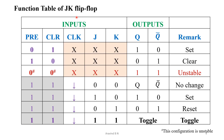Before getting into the design of the counter, let us look at the functional table of the JK flip-flop. Within this functional table, we are going to use one specific condition to design the counter — that is the toggle condition. For the toggle condition, preset equals 1, clear equals 1, and J and K must be kept equal to 1. Then we get the toggle condition at the output. The clock triggers on the falling edge.